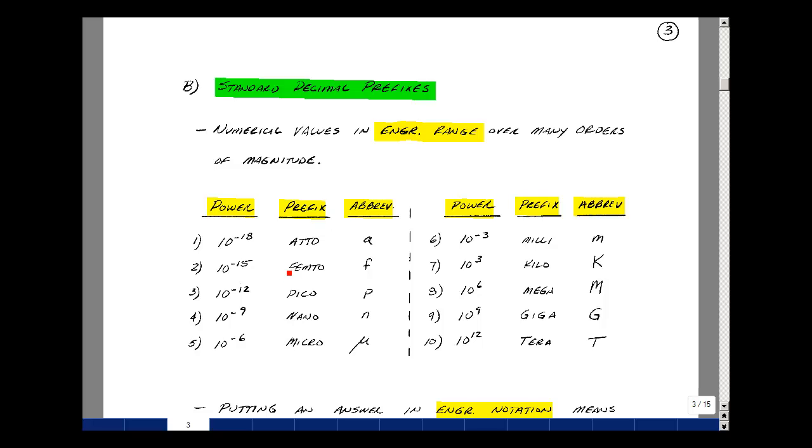Let's start out with this first one here as 10 to the minus 18th, pronounced atto, small a. 10 to the minus 15th, femto, small f. 10 to the minus 12, pico, small p. 10 to the minus 9th, nano, small n. 10 to the minus 6, micro, usually the Greek symbol mu. Milli, 10 to the minus 3, small m.